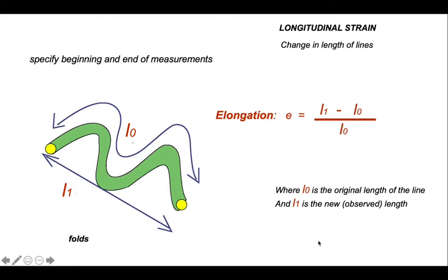The first thing we must do is to specify the beginning and the end of the measurements. So how much bed length are we going to worry about? And obviously it's critical that the measurements we make are between these two points, both for the L1 and the L0 measurement.